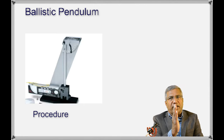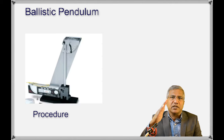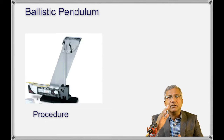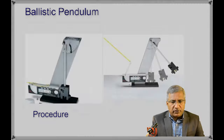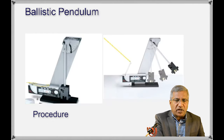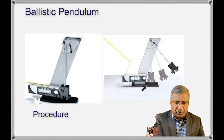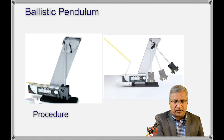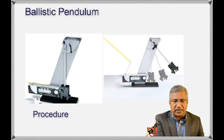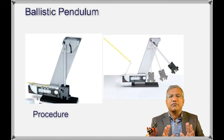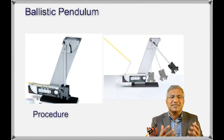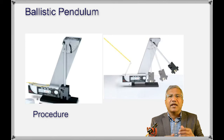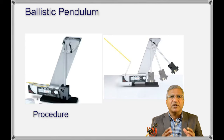The pendulum will drop down after that, but the lever will stay there showing us the maximum angle through which the pendulum swung. In the diagram, when you pull the trigger the pendulum swings up to this maximum position and the lever shows a certain angle. We need to repeat this 10 times and take the average value of the angle.